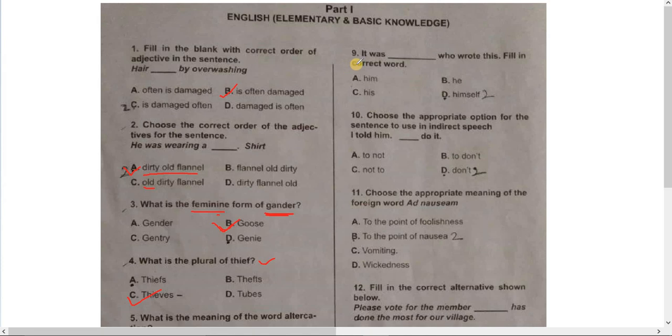Number 9. It was blank who wrote these, fill in correct words. It was him, it was he, it was his, it was himself. Number B is the correct option: it was he who wrote these.